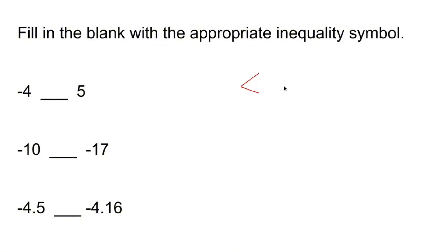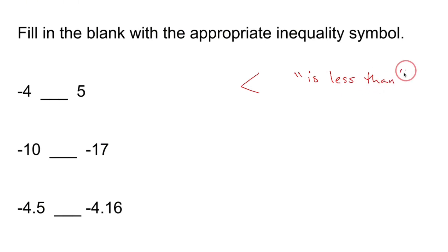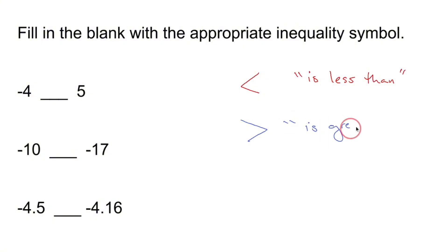When it looks like an arrow pointing to the left, that's the phrase 'is less than.' When we see what looks like an arrow pointing to the right, that's the phrase 'is greater than' or 'is bigger than.' So what we're going to do is compare the two numbers and see which symbol seems to work.